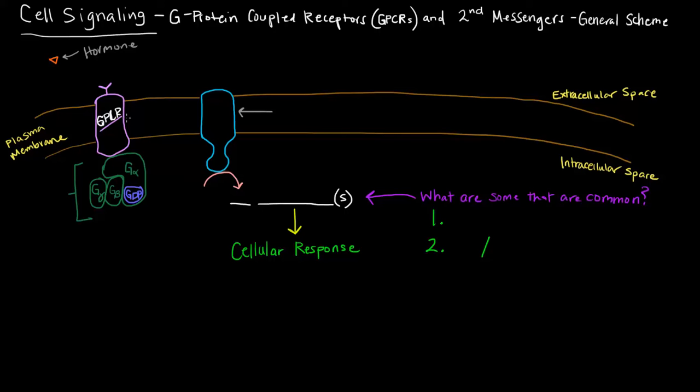Why is it called that? Because attached to this G-protein coupled receptor is a G-protein. This G-protein has three subunits: the alpha subunit, beta subunit, and gamma subunit. Initially it has a GDP attached to its alpha subunit because it's in an inactive state.